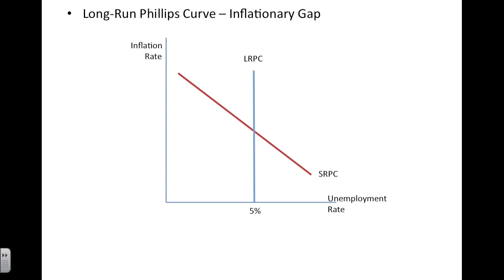The AP exam might ask you to start your long-run Phillips curve with an inflationary gap. If you have an inflationary gap, essentially prices are higher and unemployment is lower. So we're going to begin our inflationary gap to the left of the long-run intersection.